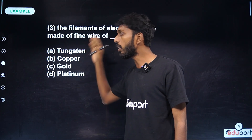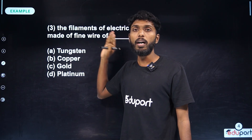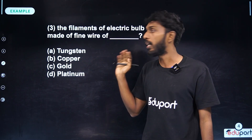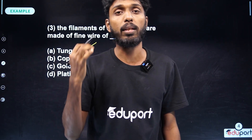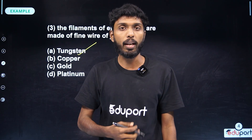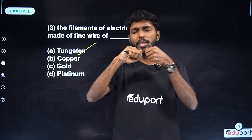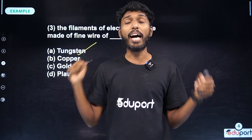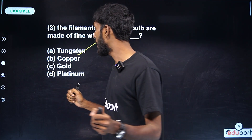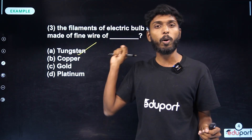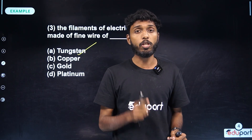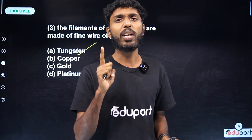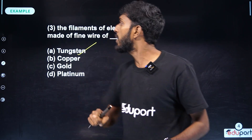Whether it is tungsten, copper, gold, or platinum — tungsten filament. There is a substance called tungsten; it is a neat thin wire. This is a ductility property.